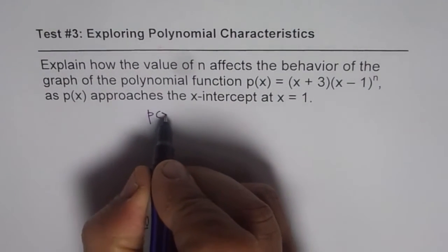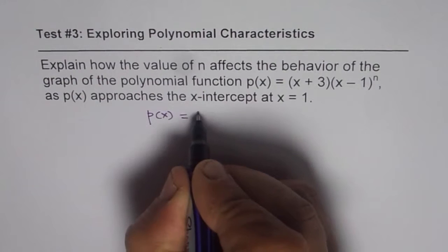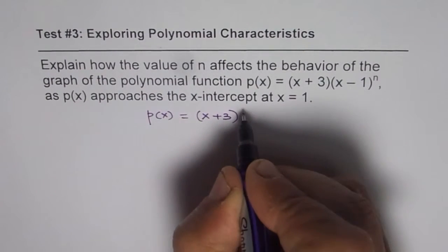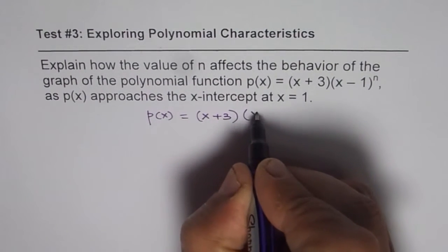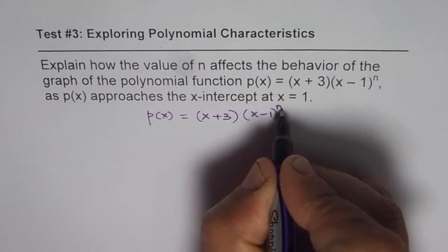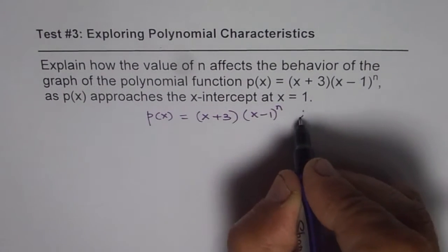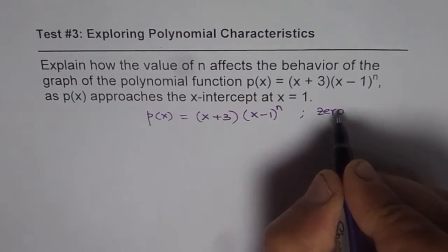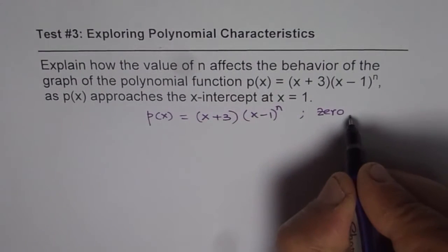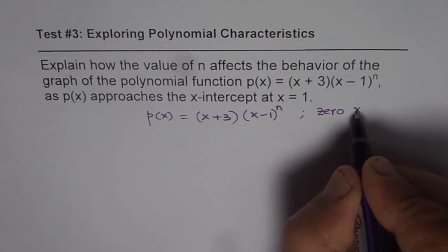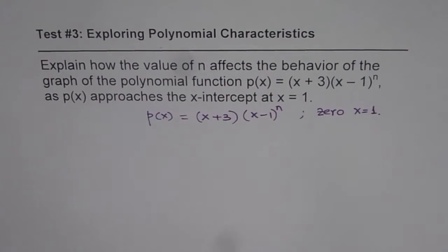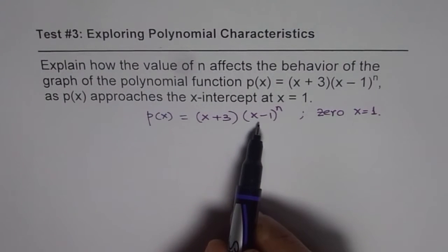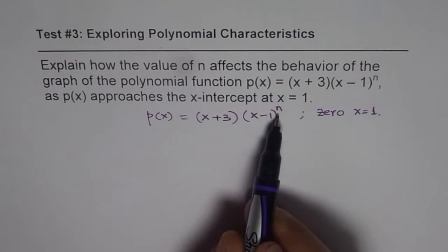We have the polynomial p of x equals to x plus 3 times x minus 1 to the power of n. We need to analyze the zero at x equals to 1. If you look at that zero at x equals to 1, it has a degree of n.